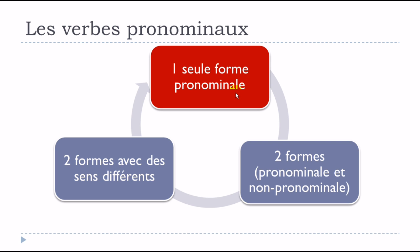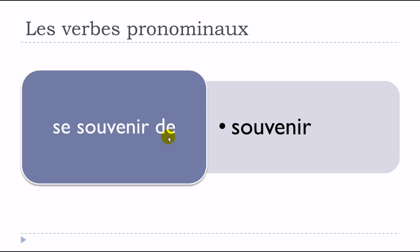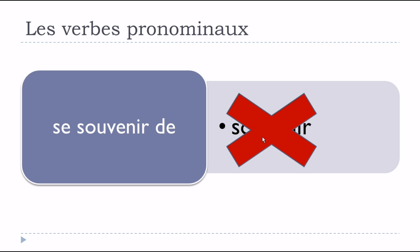The last situation is that you have both forms — pronominal and non-pronominal — but the meanings will be quite different. We'll start first with the situation where we have only one form: la forme pronominale. For example, the verb 'se souvenir de' — many students make the mistake of using 'souvenir' without 'se', but that non-pronominal form simply doesn't exist.